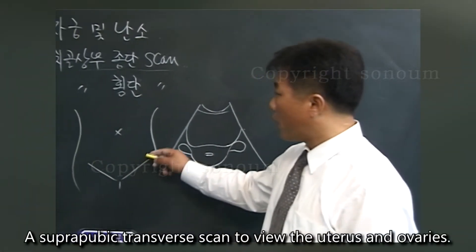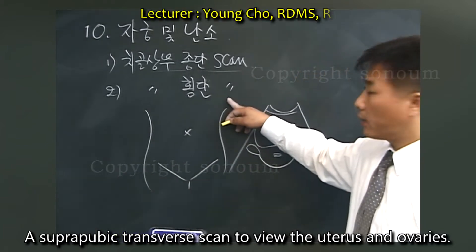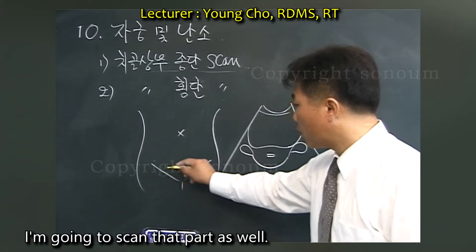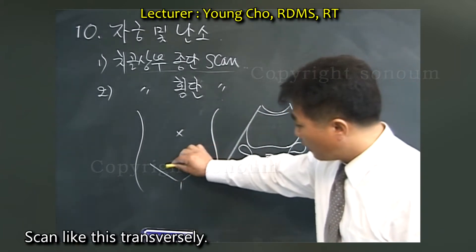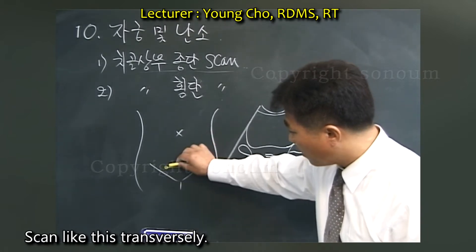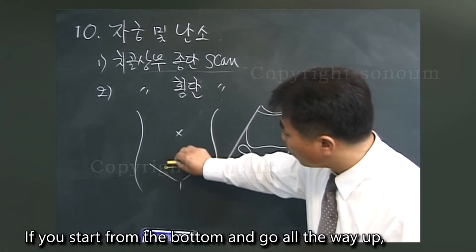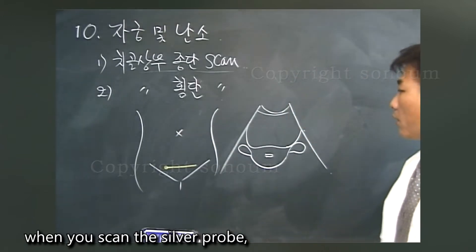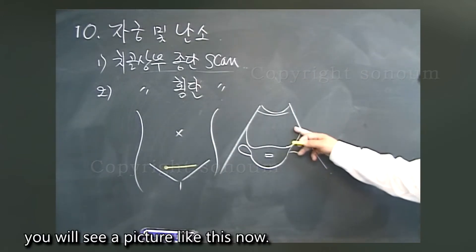A suprapubic transverse scan to view the uterus and ovaries. I'm going to scan that part as well — scan like this transversely. If you start from the bottom and go all the way up when you scan the probe, you will see a picture like this now.